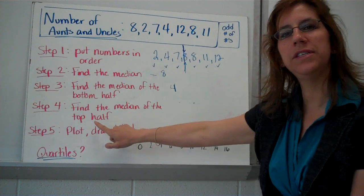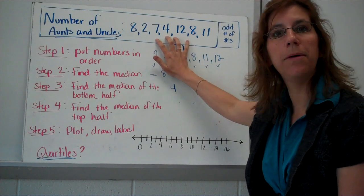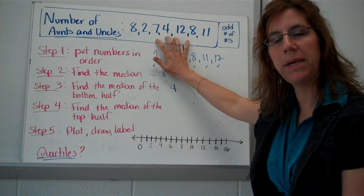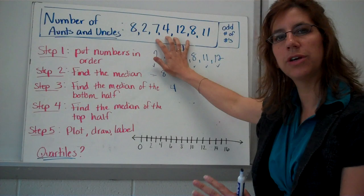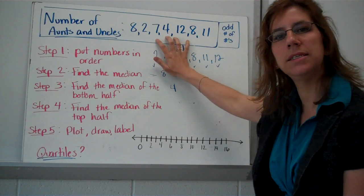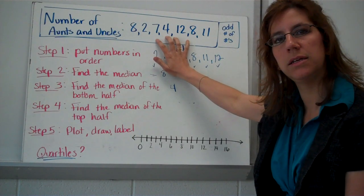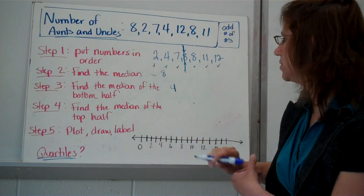All right. Now we're going to look at the top half. So again, notice I'm covering up the middle number, the 8, my median. I'm covering that up. I'm only looking at the top half. So we have 8, 11, and 12. What's the median of those three? 11. Good.